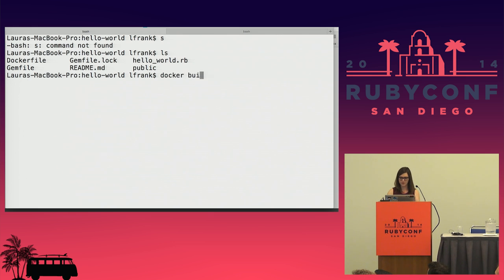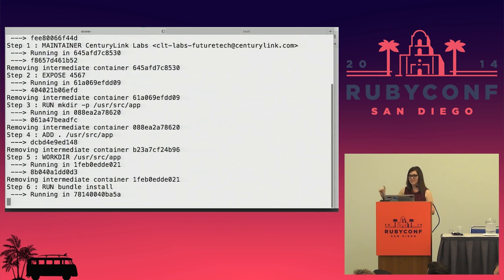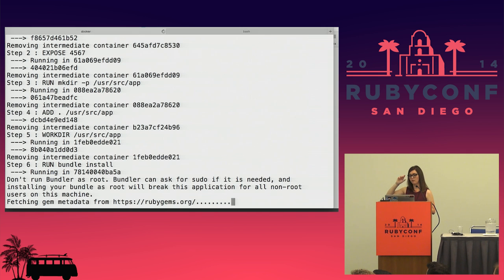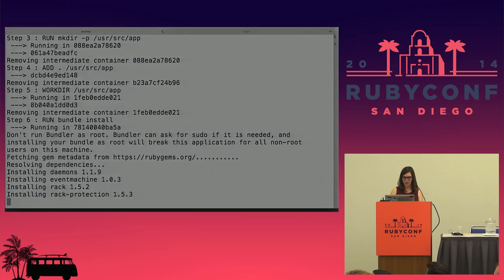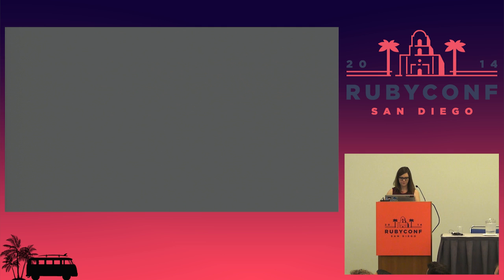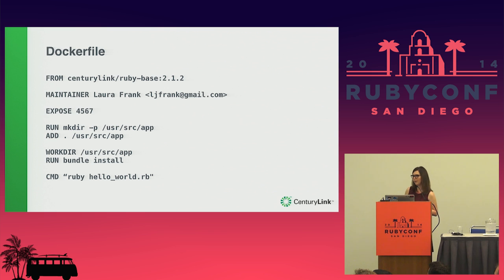So I'm going to `docker build` dash T, and I'll just call this hello world, with a dot because it's where I am now. We can see the layered file system already in use — we can see step four, and it's giving us the place in memory where all this stuff is stored. This might take a little while. Live demo is always a little nerve-wracking for everyone involved, including the audience.